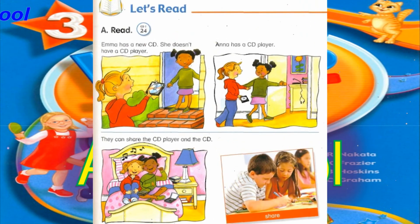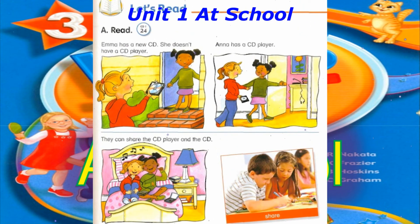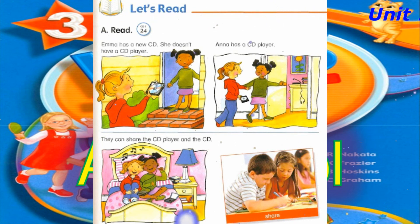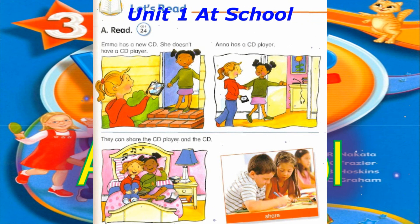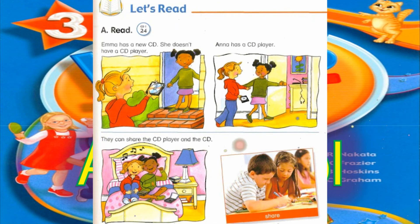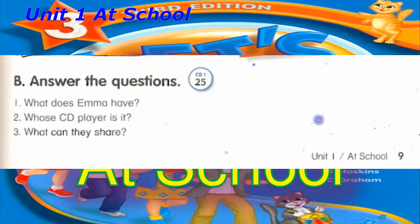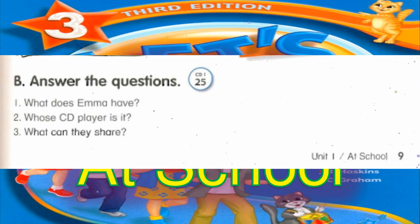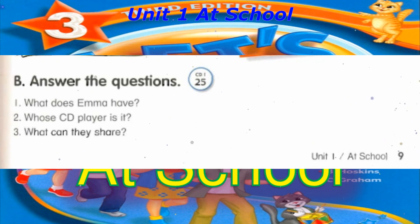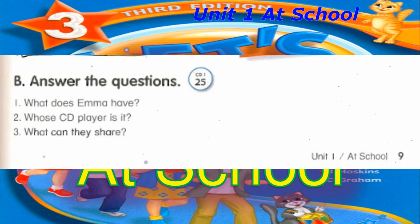Track 24. Let's read. A. Read. Emma has a new CD. She doesn't have a CD player. Anna has a CD player. They can share the CD player and the CD. Track 25. B. Answer the questions. Number 1: What does Emma have? Number 2: Whose CD player is it? Number 3: What can they share?